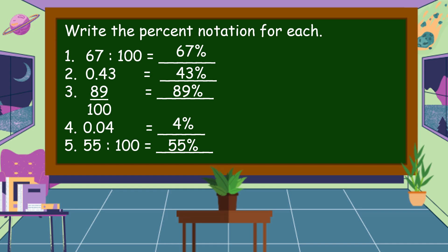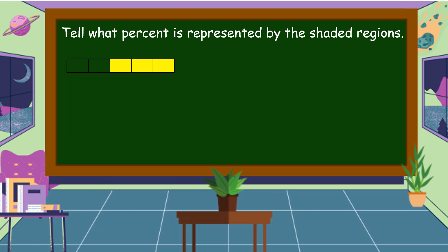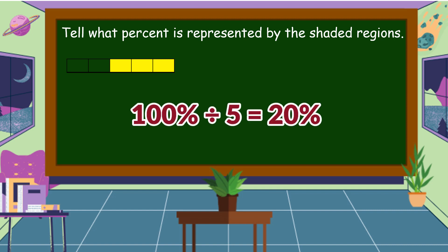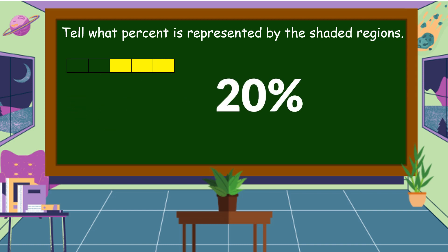What percent is represented by the shaded regions? This figure is divided into five equal parts. One figure is equal to 100 percent, so 100 percent divided by five is equal to 20 percent — each region equals 20 percent. If there are three shaded parts, what percent is the shaded region? The answer is 60 percent.